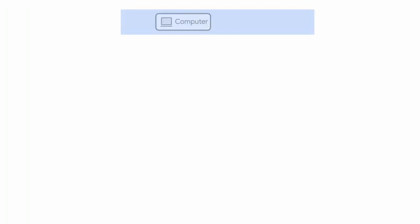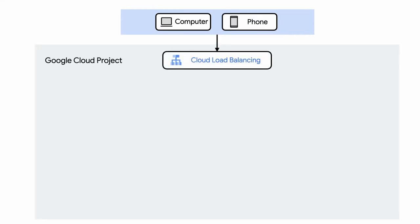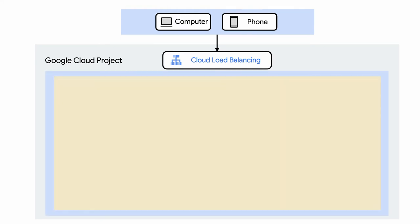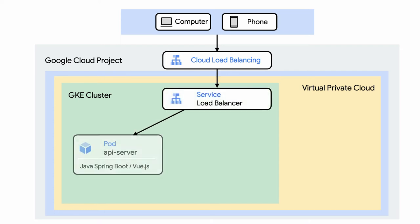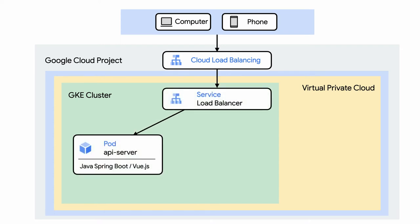As a user accesses the Point of Sale app running in Google Cloud, they'll first have their HTTP requests handled by a Google Cloud load balancer. This load balancer routes traffic to our Point of Sale web app, which is made up of a few services running in a Google Kubernetes Engine Autopilot cluster. Configured via a Kubernetes service, the load balancer distributes traffic across Kubernetes pod replicas of the Point of Sale API server service.